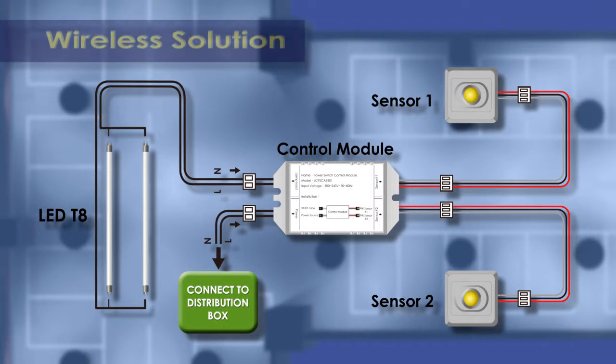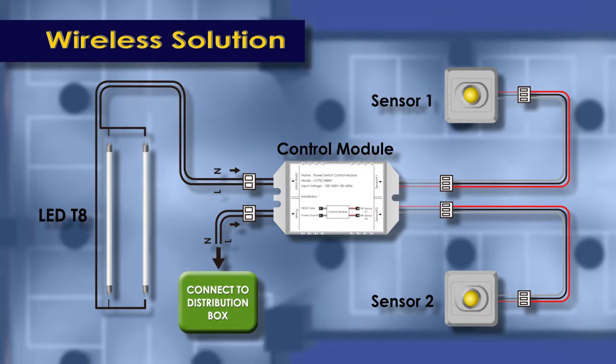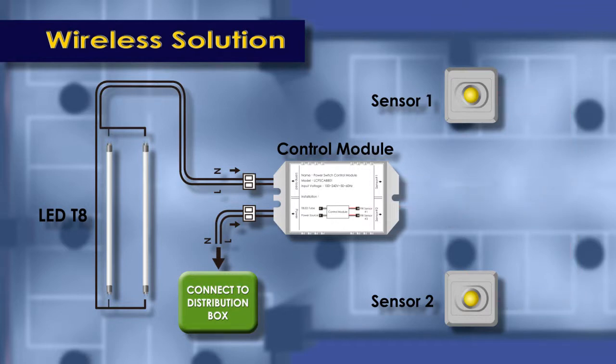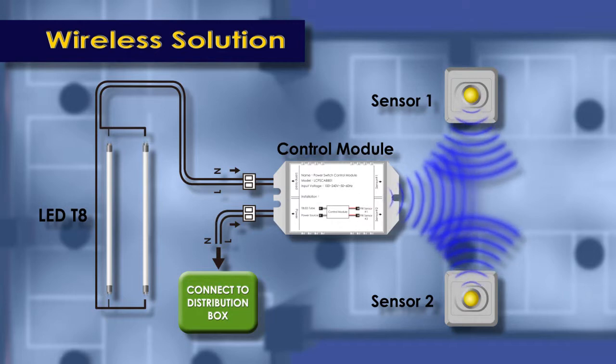The second method is a wireless solution. Without changing the wiring between LED lights and the control module, we only need to install a wireless system control module and sensors.